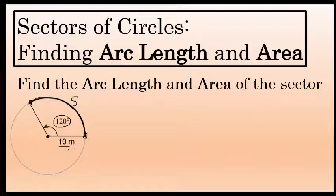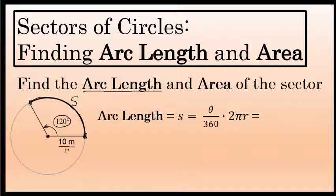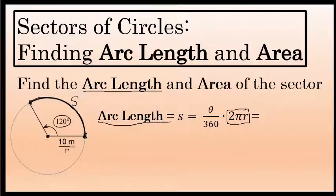The arc length is a fraction of the circumference of the entire circle. The formula to find the arc length of a sector is related to the formula for the circumference of the entire circle. The formula for arc length, often abbreviated S, is theta over 360 times 2 pi r, where theta is the central angle of the sector and r is the radius. 2 pi r is the formula for the circumference of the entire circle.